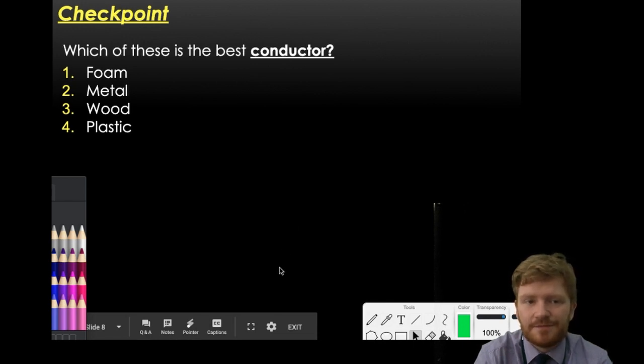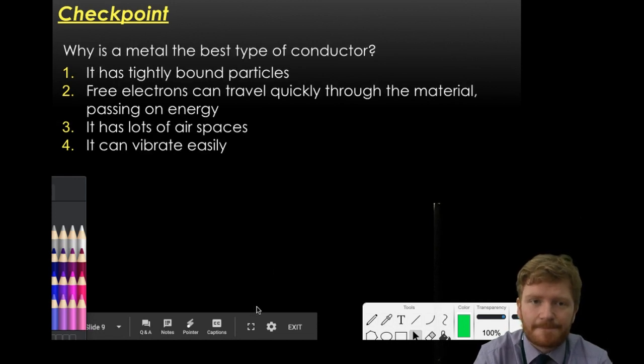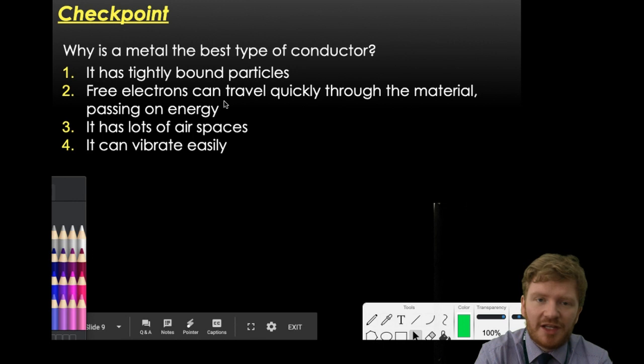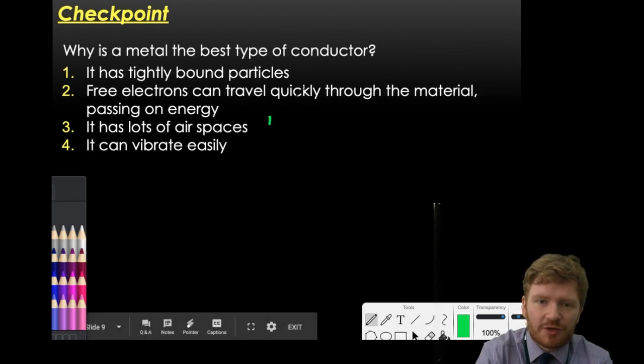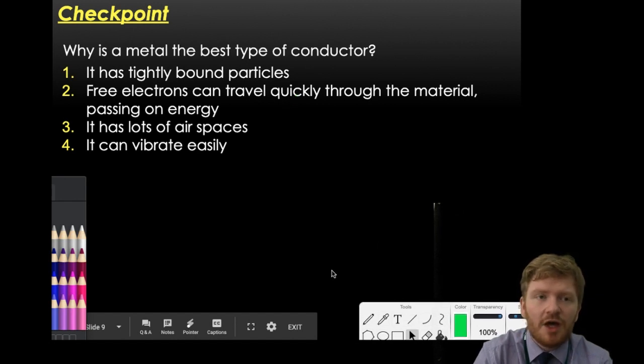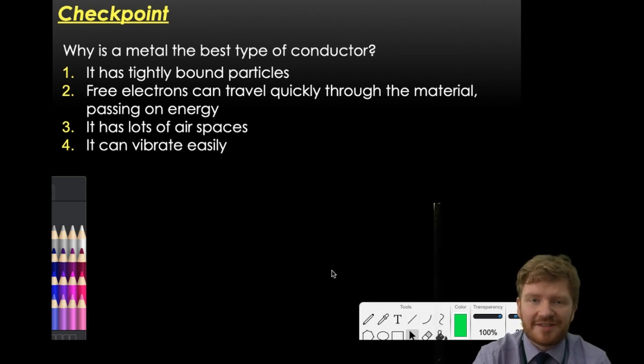Which is the best conductor? No prizes for guessing this one because I did just tell you the answer. That one is metal. And why is metal the best type of conductor? As we talked about earlier, it's got those free electrons and those free electrons can travel quickly through the material, passing on the energy. I hope that was useful to you. As always, if you have any questions, please come and speak to me during the lesson.